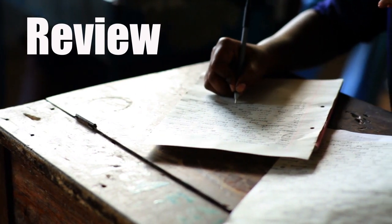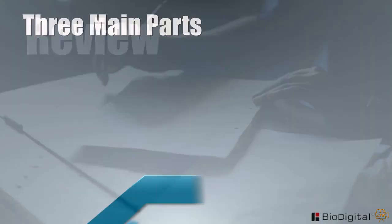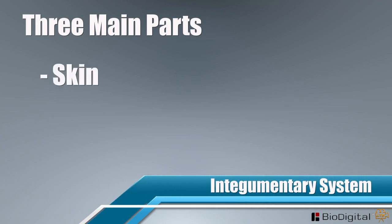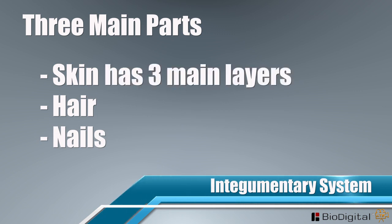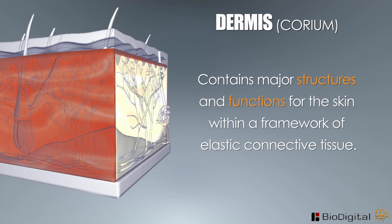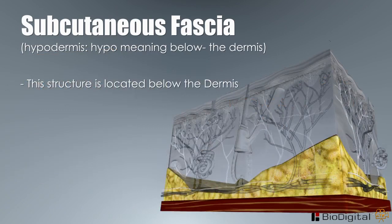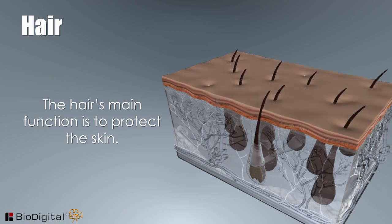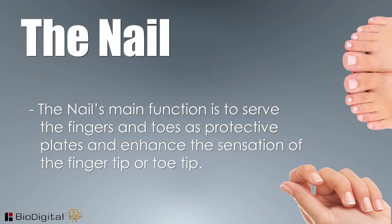Before we conclude part one of the integumentary system, let's review. There are three main parts: the skin, the hair, and the nails. The skin has three main layers — the epidermis, which is the outermost layer; the dermis, which is just below the epidermis and contains major structures and functions within a framework of elastic connective tissue; and the subcutaneous fascia, or hypodermis, which is the innermost layer. The hair's main function is to protect the skin. The nails serve the fingers and toes as protective plates and enhance sensation of the fingertip or toe tip.